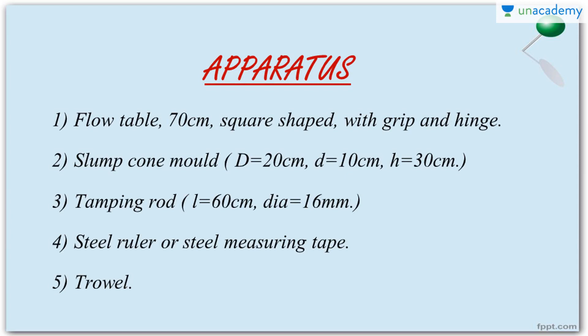The first apparatus required is, as the name suggests, a flow table. It is a square-shaped table with a side length of 70 cm. It has a grip and hinge so that it can be pulled up and put down. The material may be stainless steel. The single side length is 70 cm, and the grip and hinge allow the table to be lifted and dropped during the test.